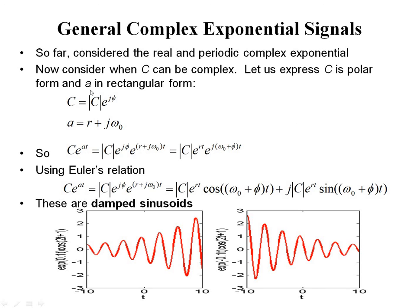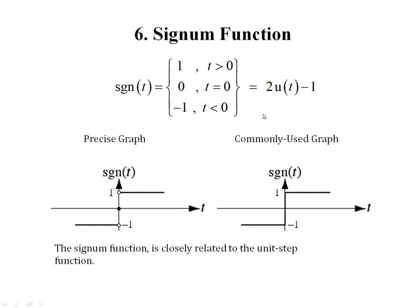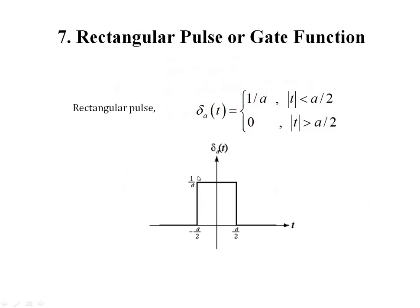The next category of elementary signal is the signum function, represented as sgn(t). It takes a value of 1 for t > 0 and −1 for t < 0. The next classification is a rectangular pulse or gate function where the signal exists only from −a/2 to +a/2. It has a value of 1/a and for all remaining values of t its value is 0.